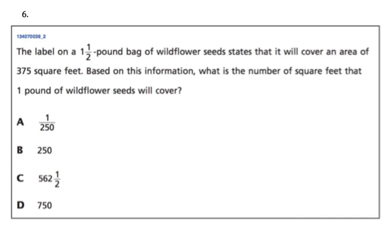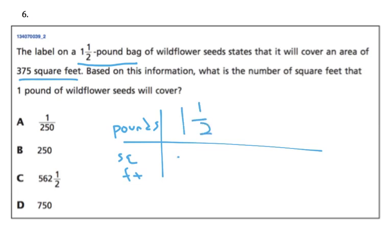Alright, the label on a 1.5 pound bag of wildflower seeds states that it will cover an area of 375 square feet. So it's a long sentence that basically tells us 1 ratio. It tells us that if we have pounds and square feet, 1.5 pounds covers 375 feet. Based on this information, what is the number of square feet? So I'm going to put a question mark there. That 1 pound of wildflower seeds will cover. So I'm going to put a 1 in the pounds spot.